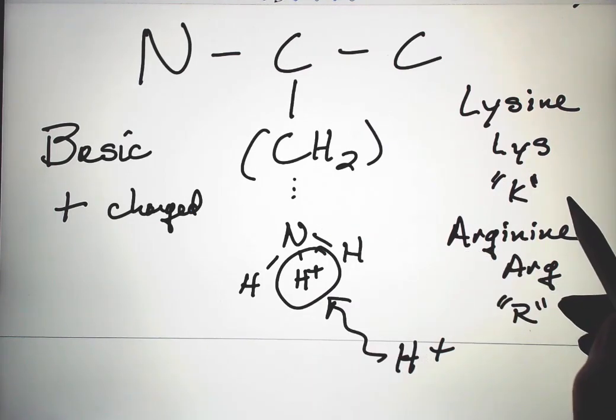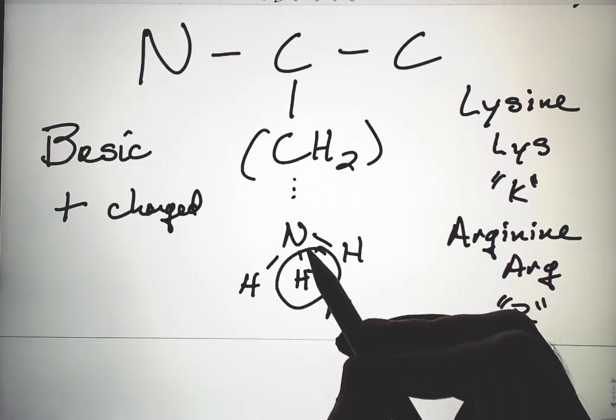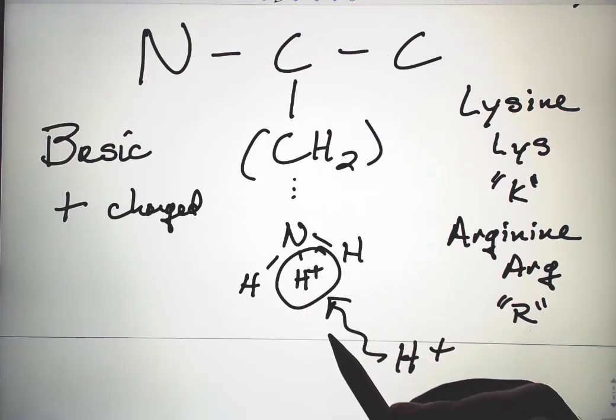The third of the basic amino acids is histidine. Histidine has a little bit more complex structure. It's got several nitrogens. It doesn't have an amino group, but has several nitrogens. And those can attract, in combination, a plus charge to be positively charged.